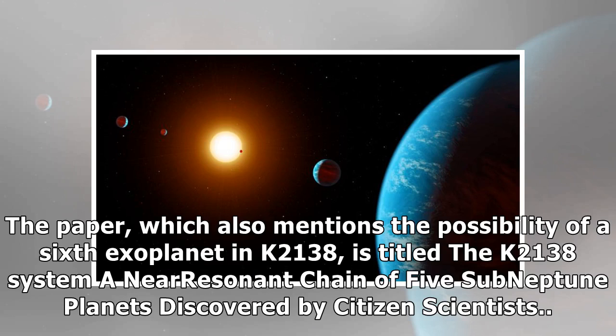The paper, which also mentions the possibility of a sixth exoplanet in K2-138, is titled the K2-138 system a near-resonant chain of five sub-Neptune planets discovered by citizen scientists.